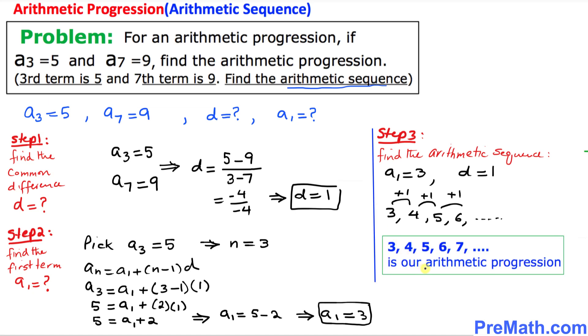Thus, our arithmetic progression turns out to be 3, 4, 5, 6, 7, and so on. That is our answer. Thanks for watching, and please don't forget to subscribe to my channel for more exciting videos. Bye!